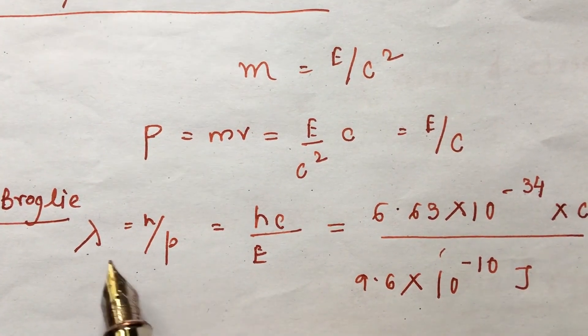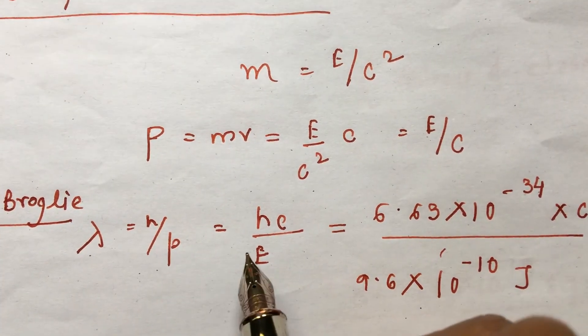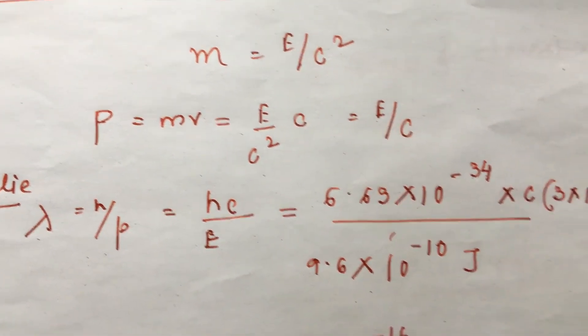We know from the de Broglie formula lambda equal to h by p. Now p is e by c. So we put p equal to e by c, which turns out to be...